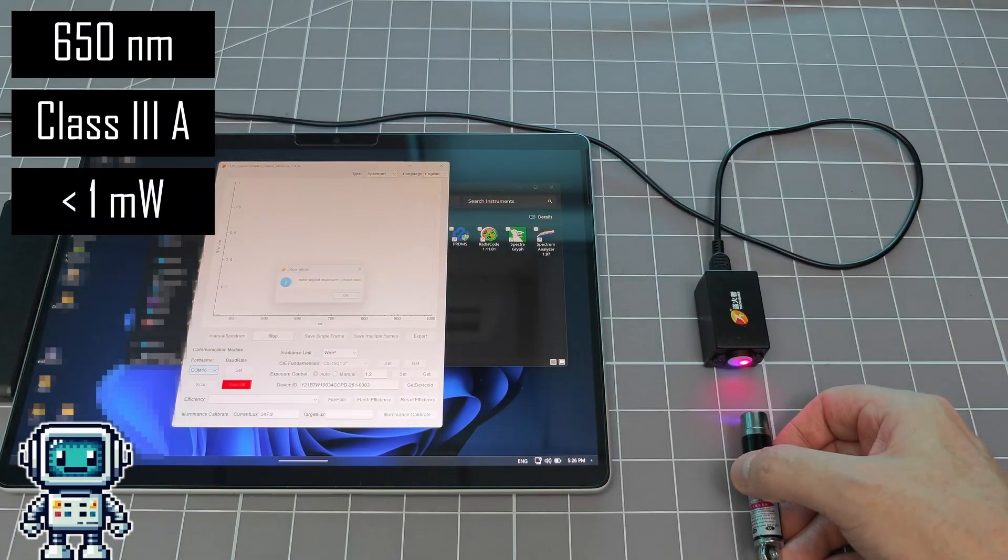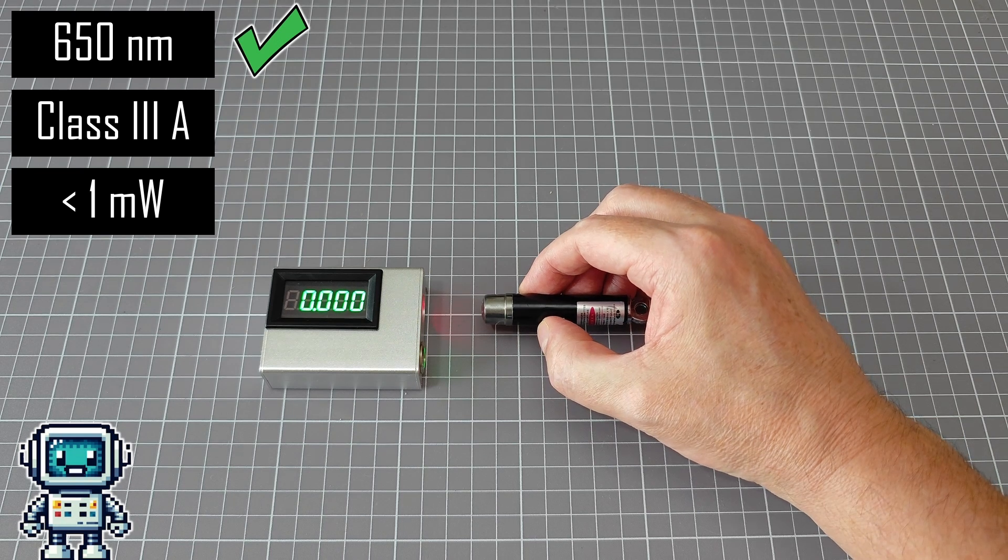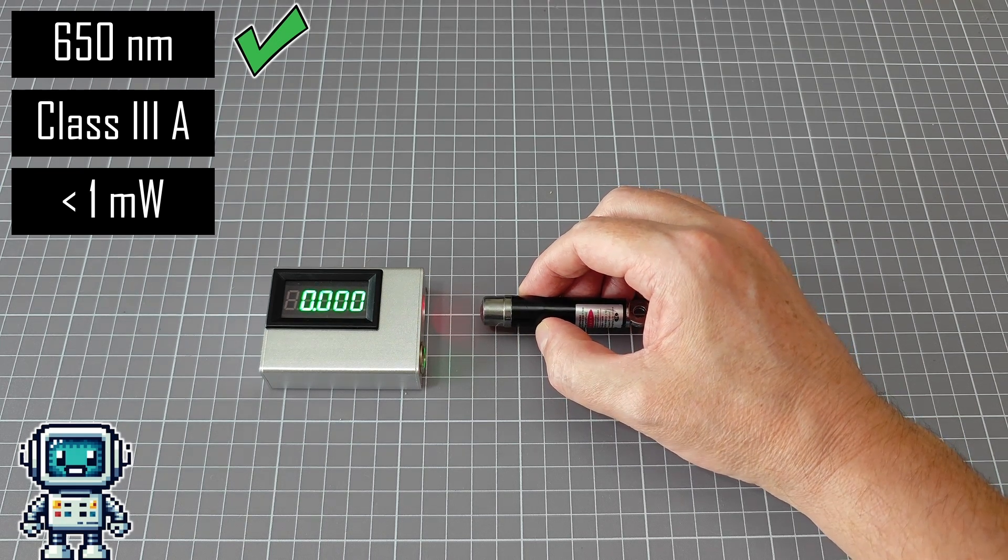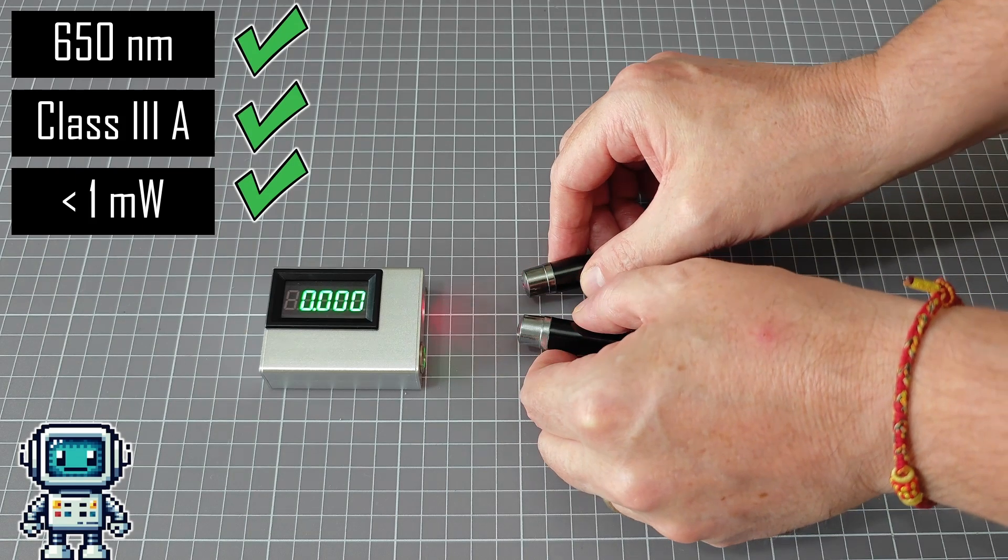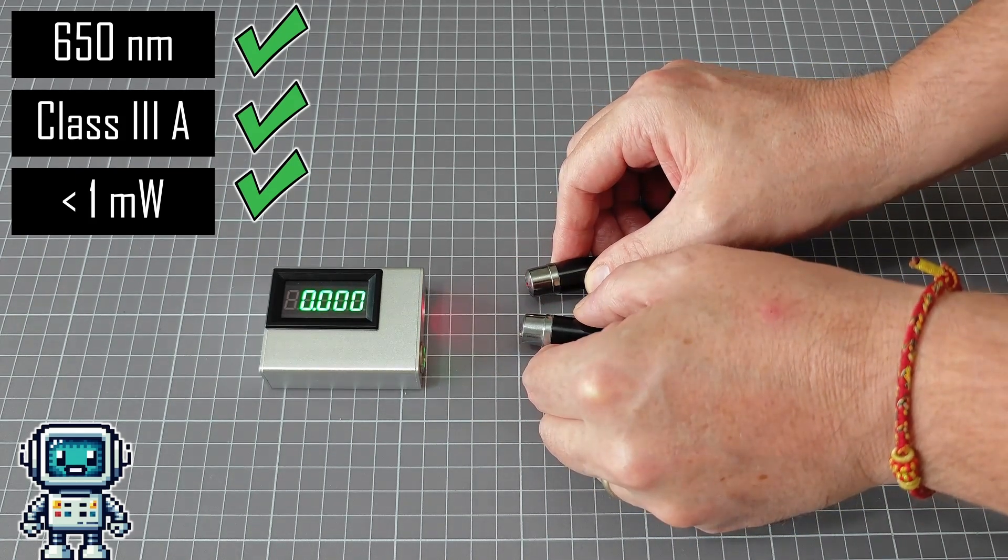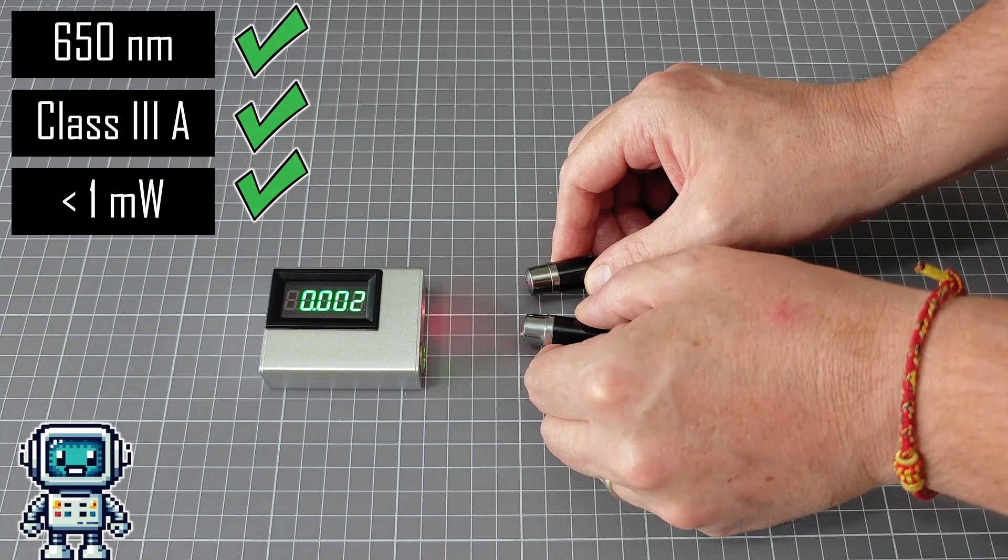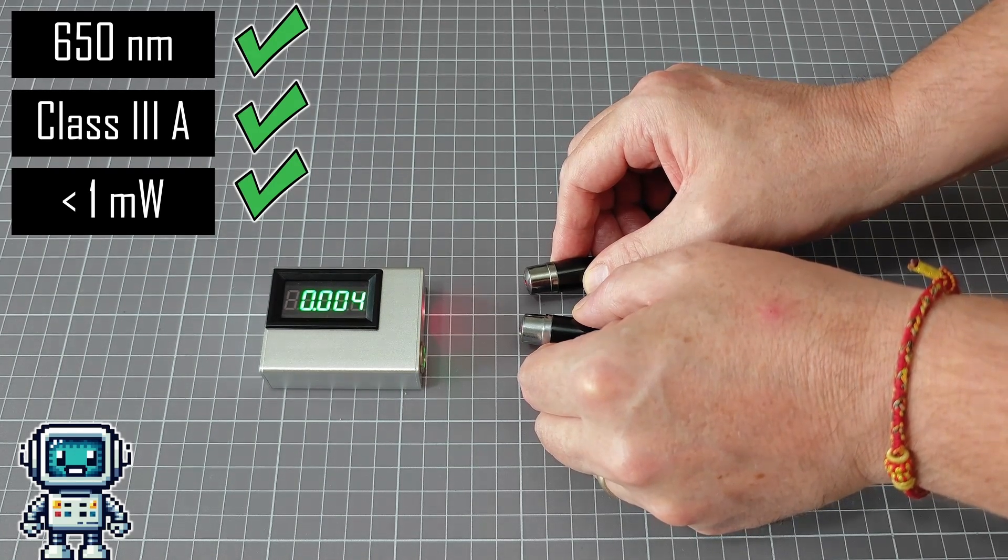Looking at the results from the spectrometer, we can confirm that the wavelength specification is correct. The output from this little laser appears to be below the detection threshold for this instrument. But instead of being deterred, we tried two of them aimed onto the same spot. As you can see, the results are not consistent. We will talk about this later.